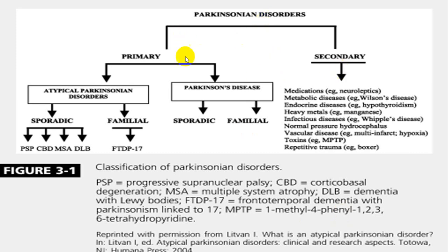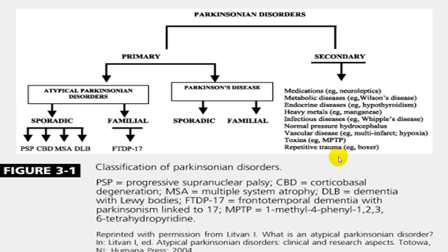Primary is divided into typical and atypical — atypical into sporadic and familial, while typical is classical Parkinson's disease, which can be sporadic or familial. Among secondary Parkinsonism: the commonest drug cause is neuroleptic drugs; metabolic disorders like Wilson's disease; endocrine disorders like hypothyroidism; heavy metals like manganese; infectious disease; normal pressure hydrocephalus; vascular disease like multiple infarcts or hypoxic damage; toxins like MPTP (methyl-phenyl-tetrahydropyridine); and repetitive trauma in boxers, football players, etc.